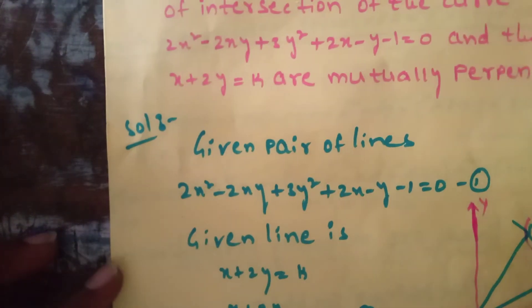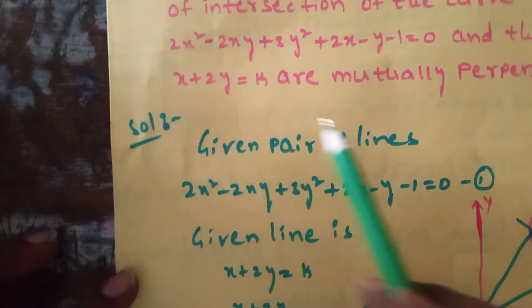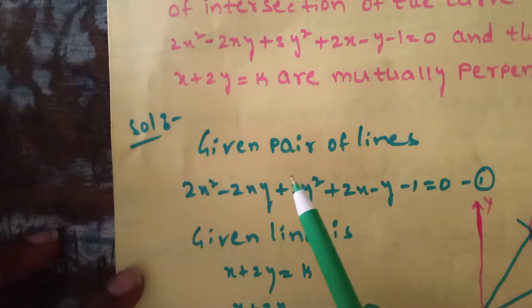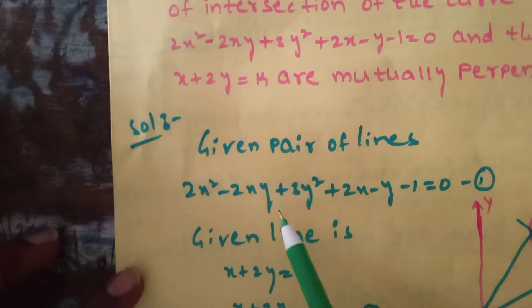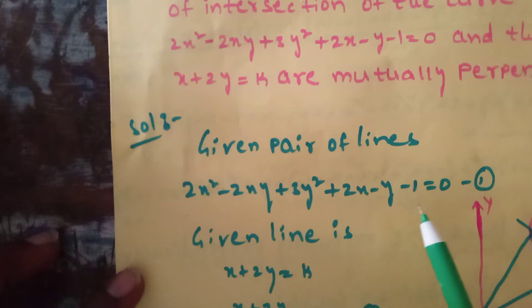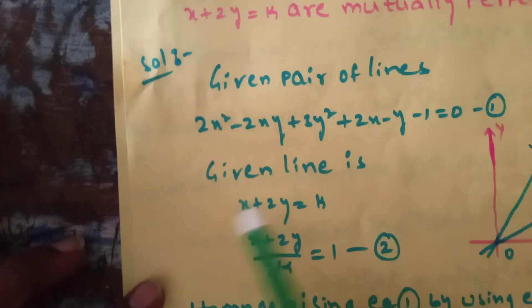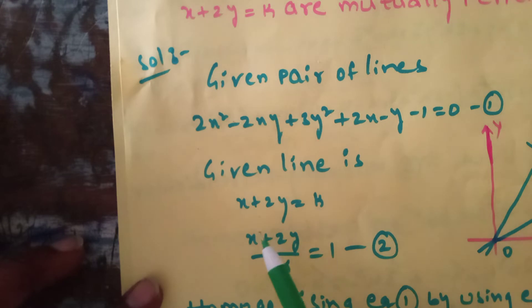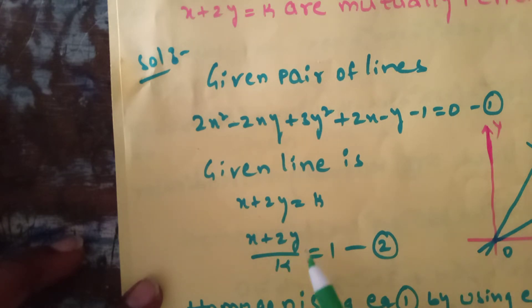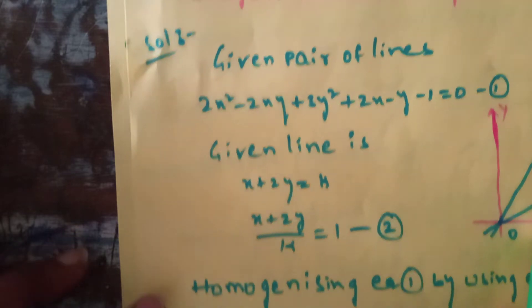See the solution. Given pair of lines: 2x² - 2xy + 3y² + 2x - y - 1 = 0, we take this as equation number 1. Given line: x + 2y = k, we can write x + 2y / k = 1, which we take as equation number 2.